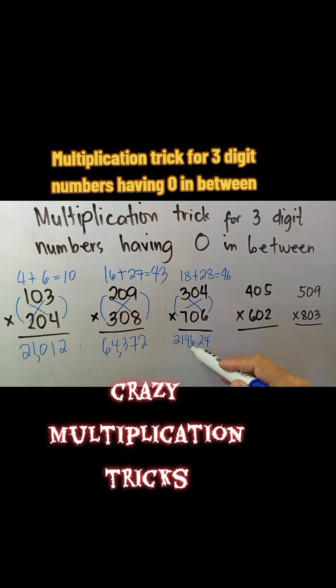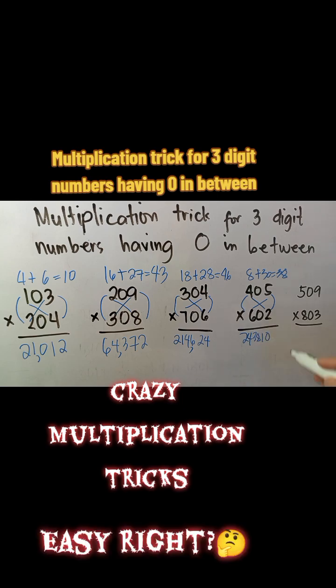So the answer for 304 times 706 is equal to 214,624. You can try the fourth example for 105 times 602 and check your answer if it is correct. Then you can also try the fifth example and write your answer in the comment section. Easy, right?